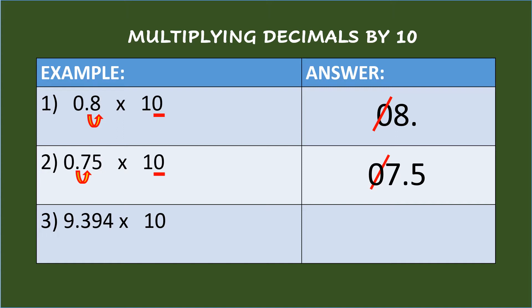In Example 3: 9 and 394 thousandths times 10. Since 10 in the multiplier has one zero, move the decimal point in the multiplicand one place to the right and put the decimal point between 3 and 9. So the answer is 93 and 94 hundredths.